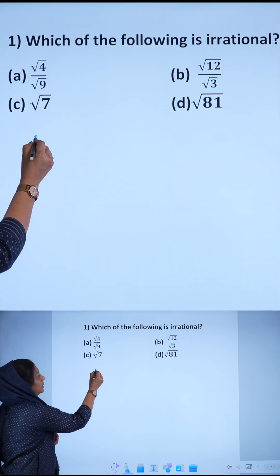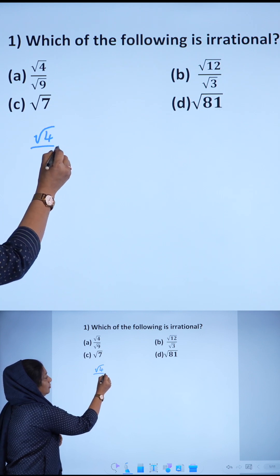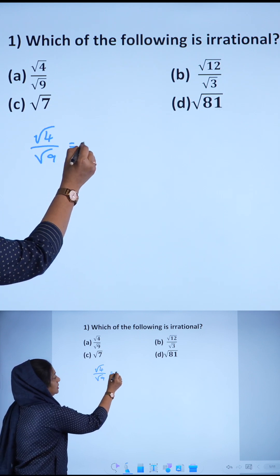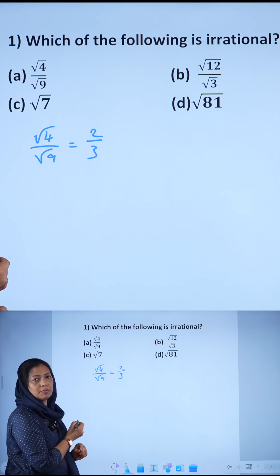Let us check root 4 by root 9. That is equal to 2 by 3. It is in the form of p by q.